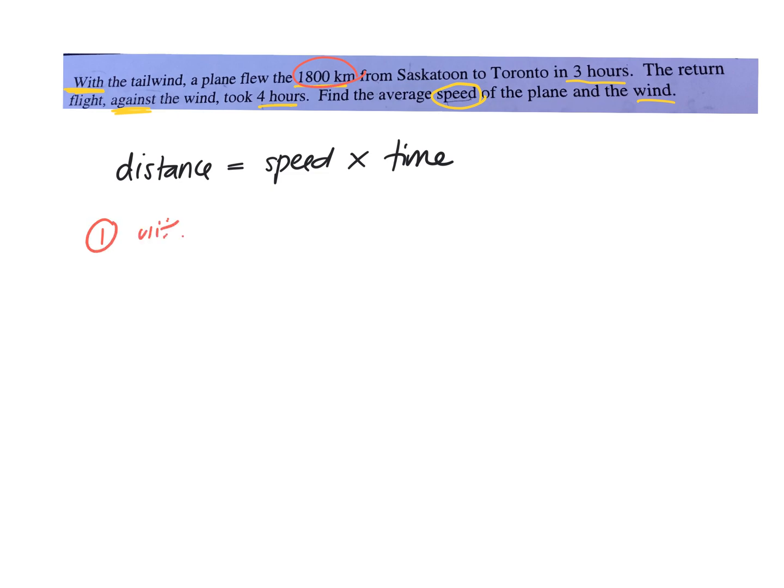There's one with the tailwind, and then there's one against the wind, which is obviously slower. So on the way there, it's 1,800 kilometers. It was the distance for the first part of the trip, and we don't know the speed. But we do know that we're trying to figure out the speed, which was affected by the wind.